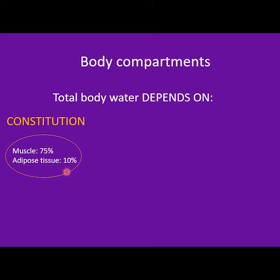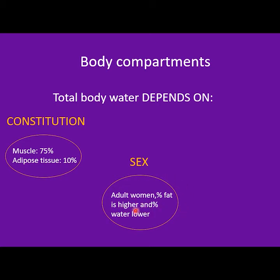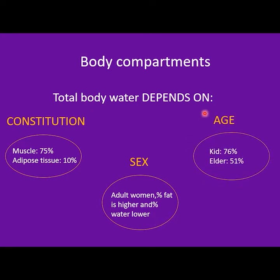You can see this variation between sexes: adult women have a higher percentage of fat tissue, so women have a lower percentage of body water than men. There is also an age factor — children have a higher percentage of body weight as water than elderly people. For adults it is approximately 60%, for children approximately 66%, and for elderly people approximately 51%.